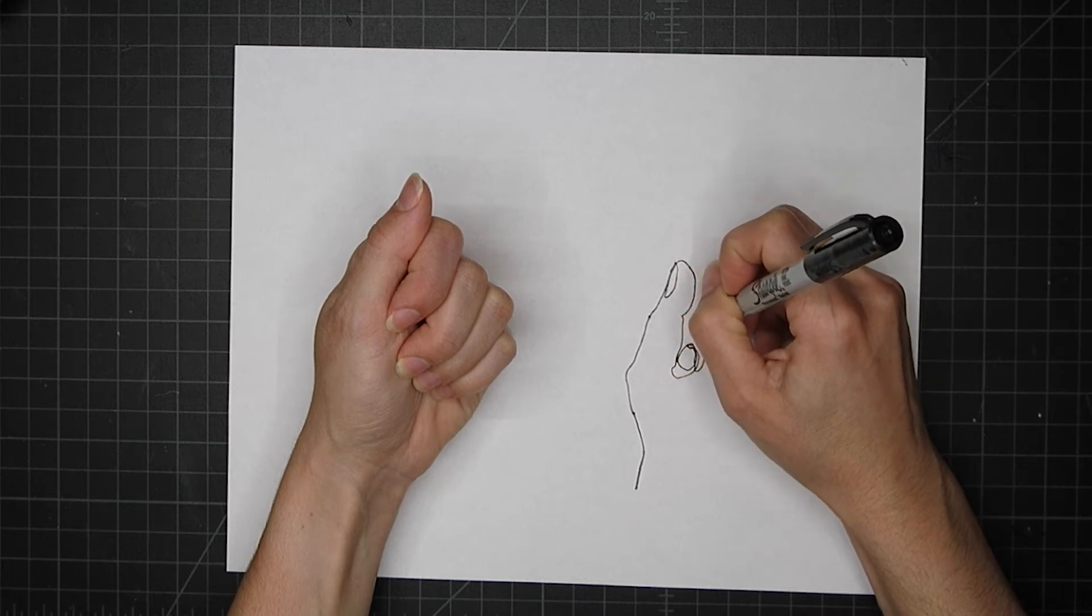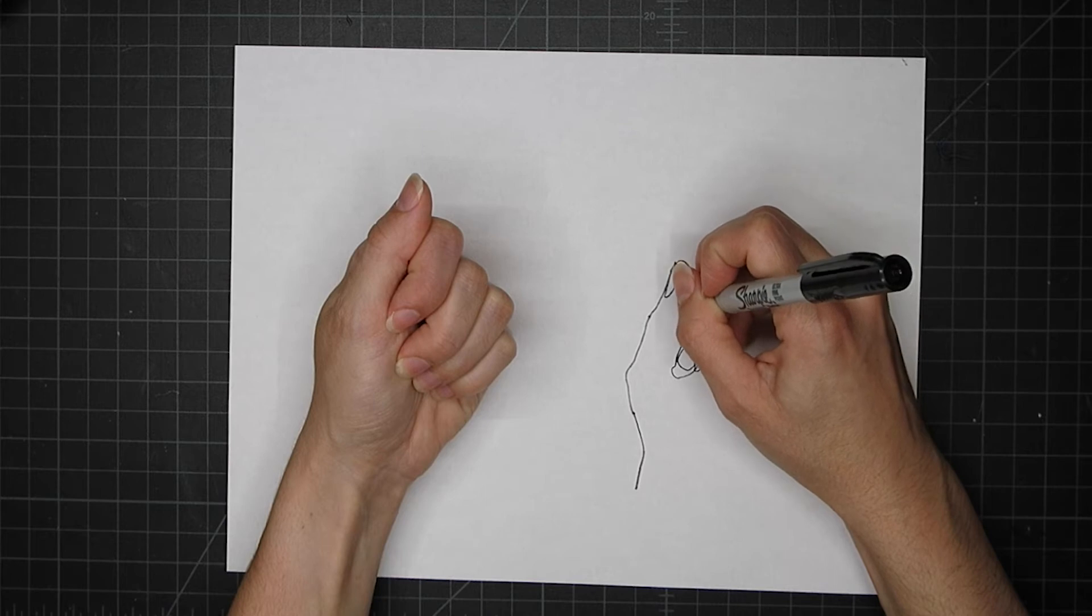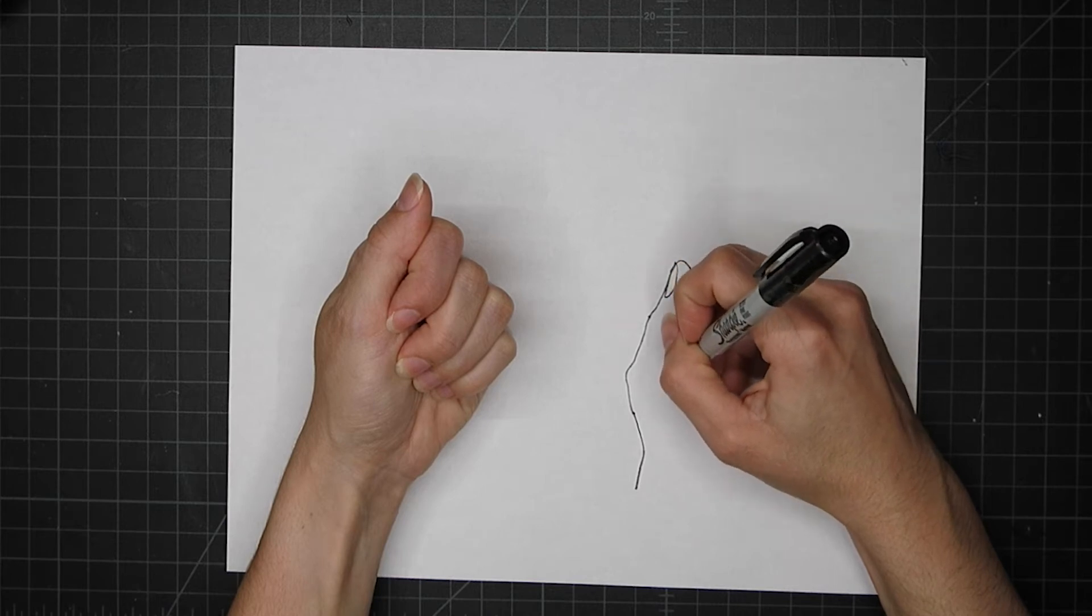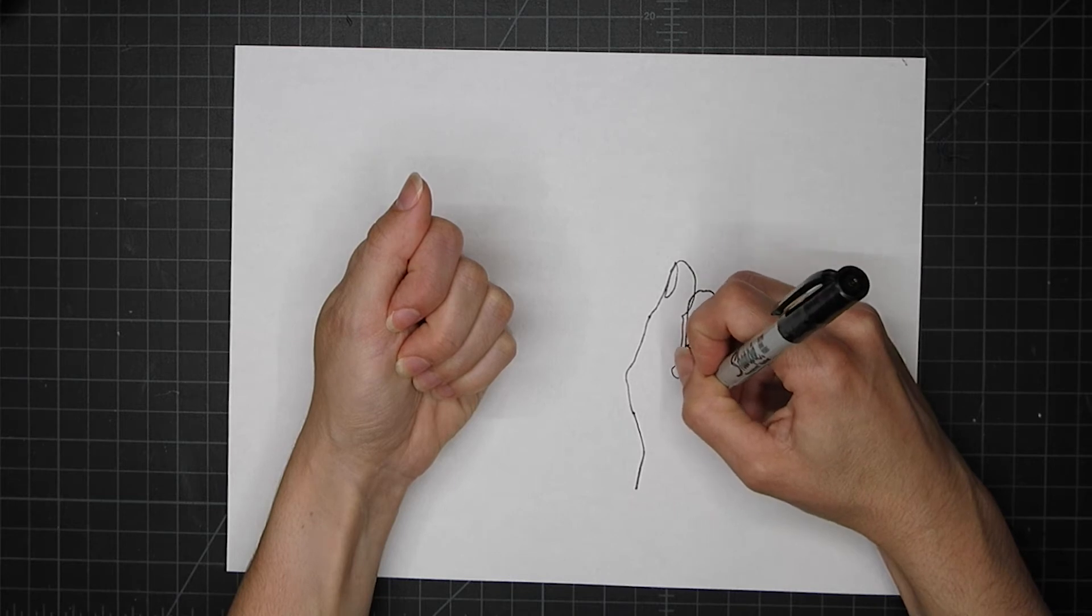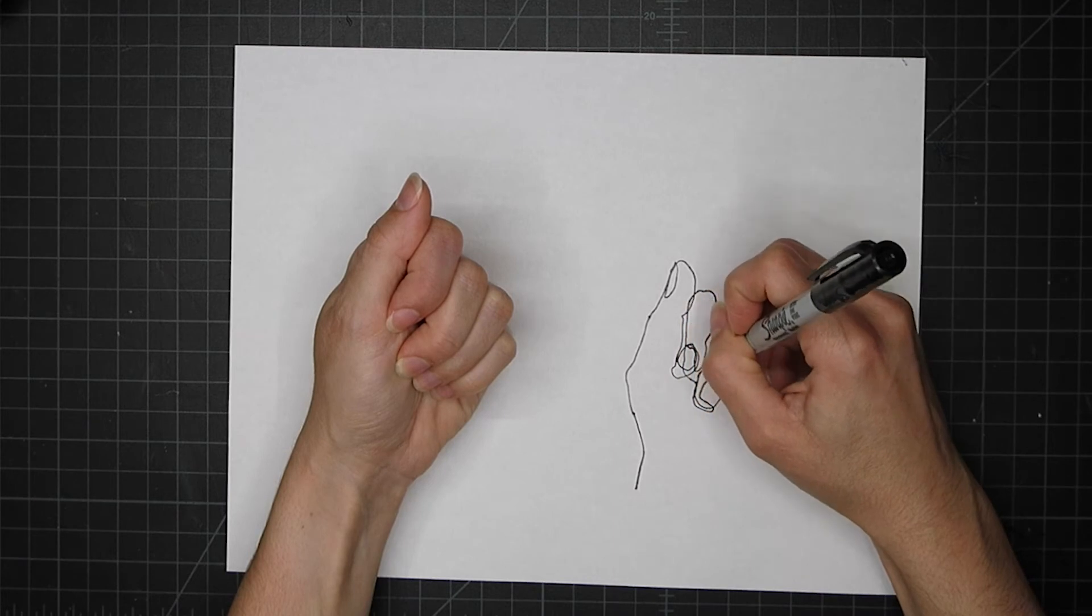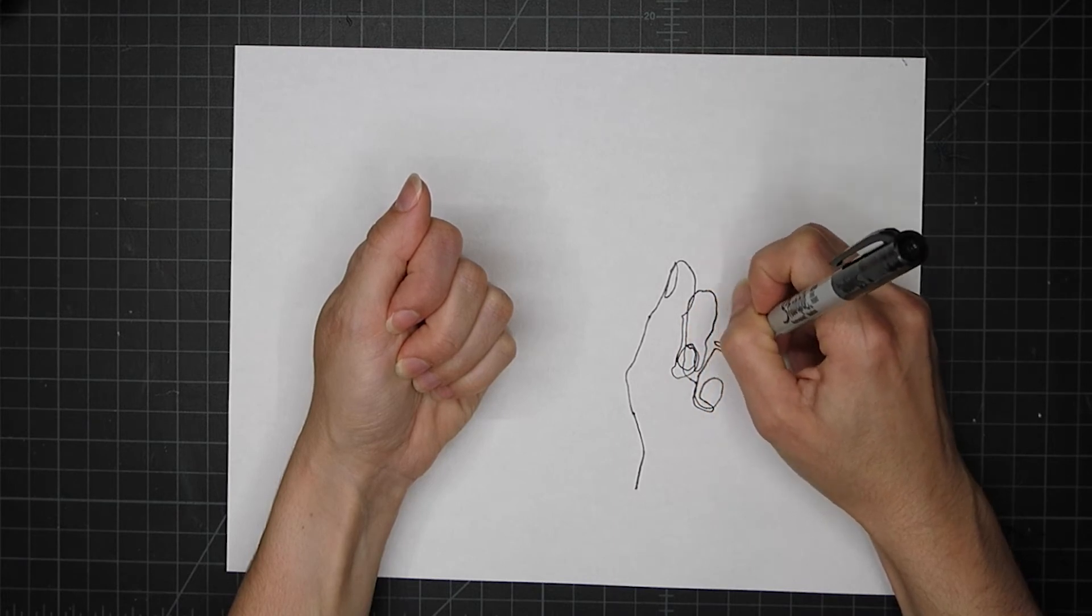Again I am not looking at all at my drawing. I am only looking at my hand. The pace of the drawing should be very slow so you can really emphasize observation.